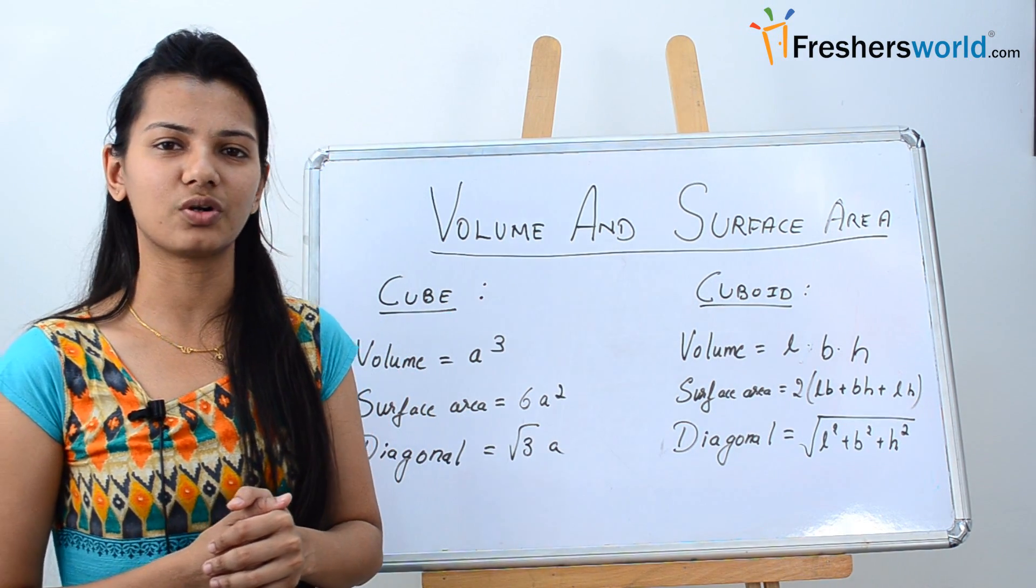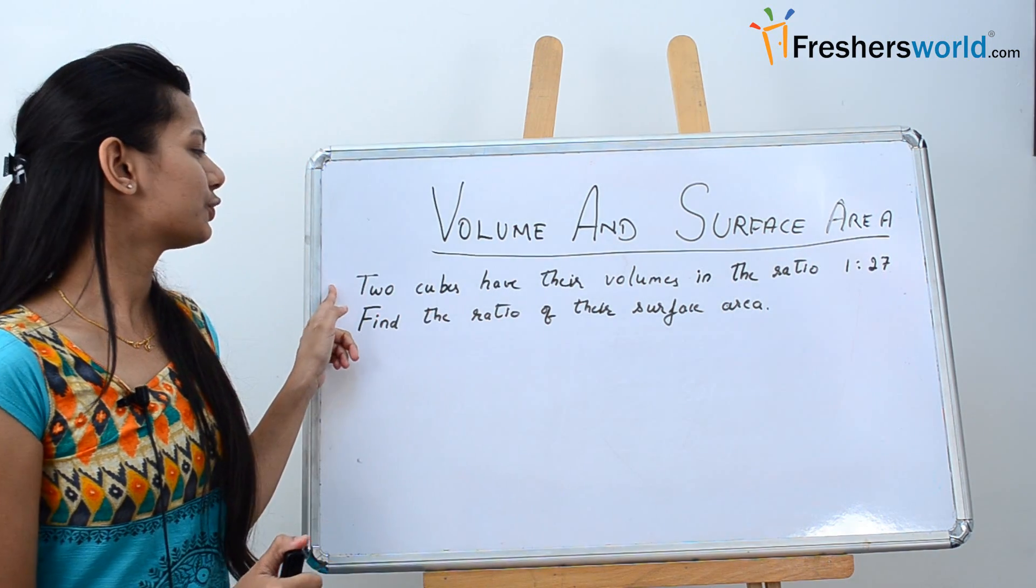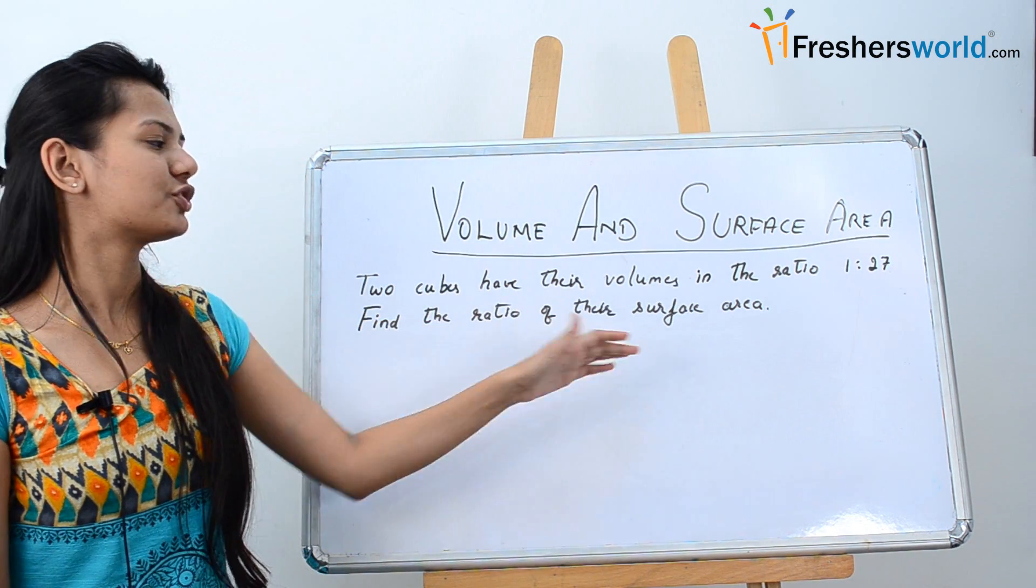Let's solve a few questions on the volume and surface area for cubes and cuboids. The first question says two cubes have their volumes in the ratio 1 to 27. Find the ratio of the surface area.